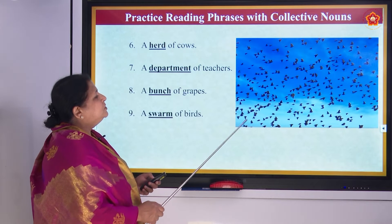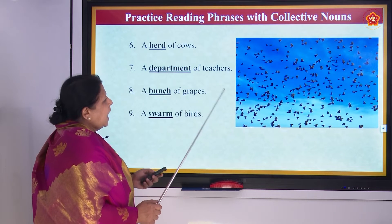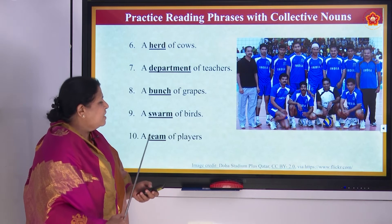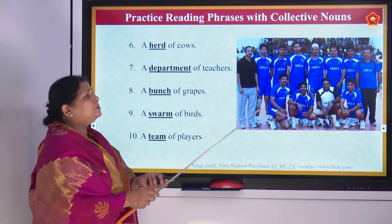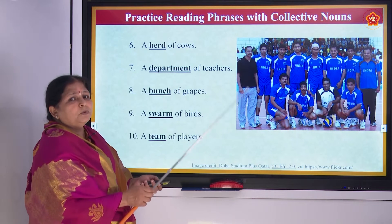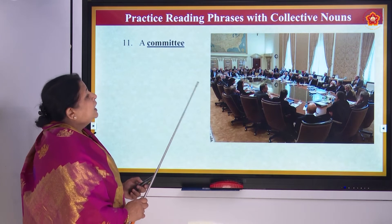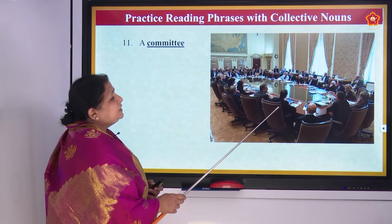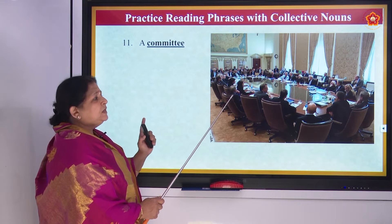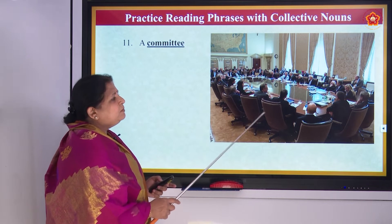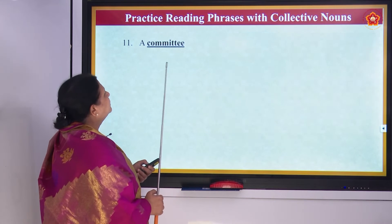Swarm of birds — S-W-A-R-M, swarm. Then we have team of players. Hockey players, football players, cricket players — they are called a team. T-E-A-M, team of players. When you are sitting for a meeting, it is called a committee — C-O-M-M-I-T-T-E-E. They are all committee members sitting together and discussing.